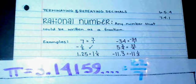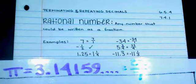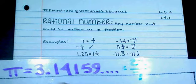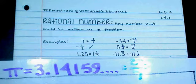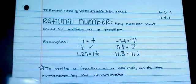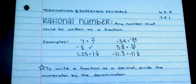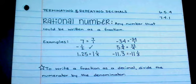22 over 7 is not an exact equivalency to pi — it's just an approximation. There are other irrational numbers, but pi is the only one we're really going to use this year.